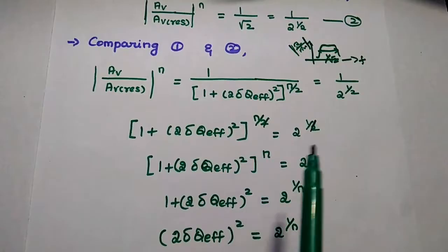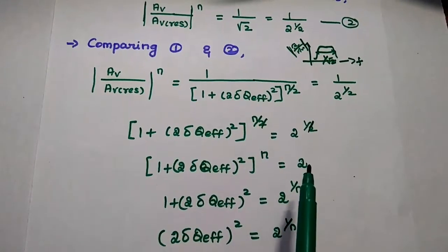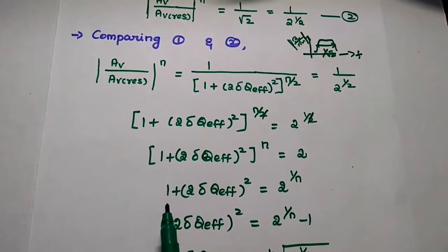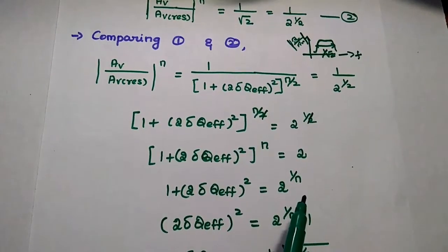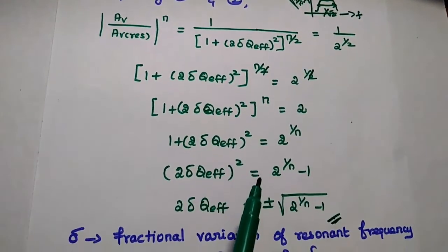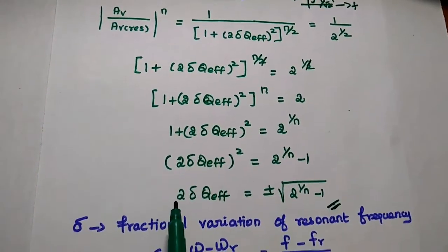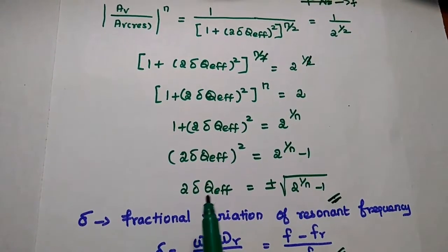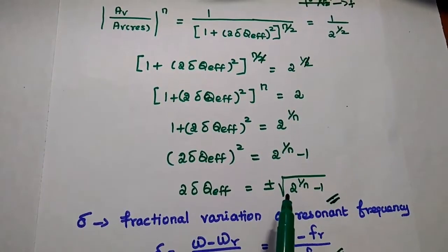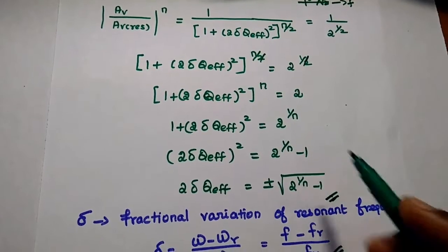We move the power to the right-hand side as 1/n, then move 1 to the right side as minus 1. Taking the square root on both sides, we get 2·δ·Q_f equals plus or minus the square root of (2^(1/n) minus 1).